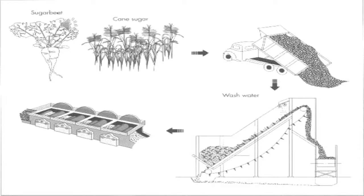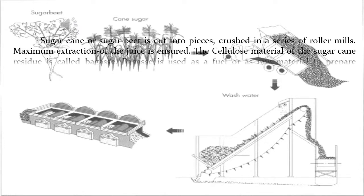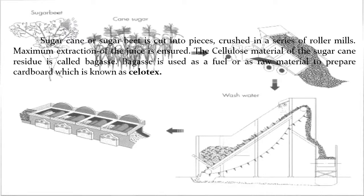Sugarcane or sugar beet is cut into pieces and crushed in a series of roller mills to ensure maximum extraction of the juice. The cellulose material of the sugarcane residue is called bagasse.